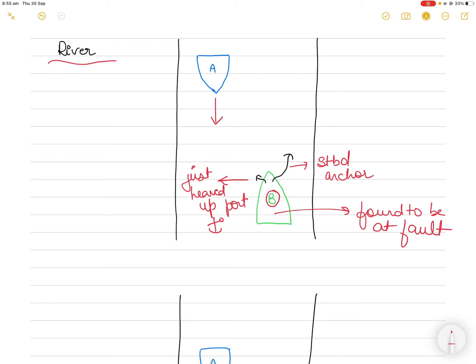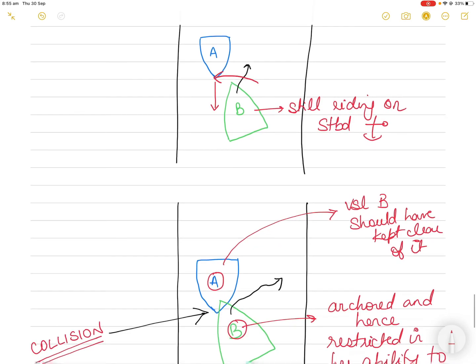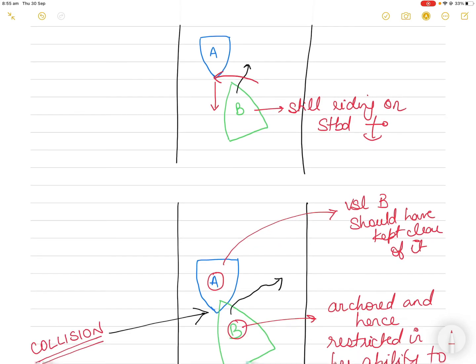Found to be at fault, and vessel B should have kept clear of vessel A. So vessel A in this case of course won the court proceeding and vessel B had to pay the damages.